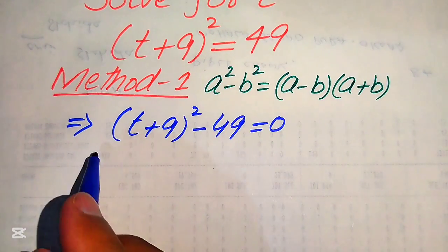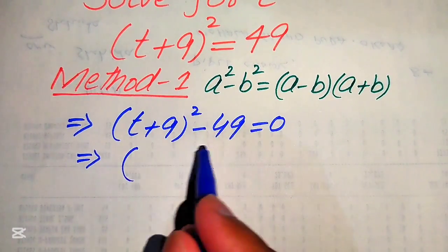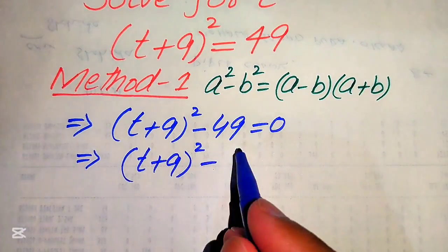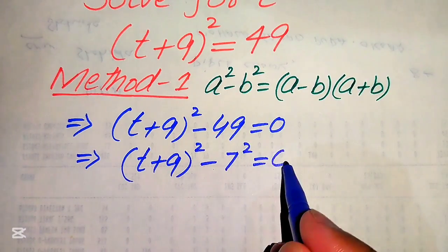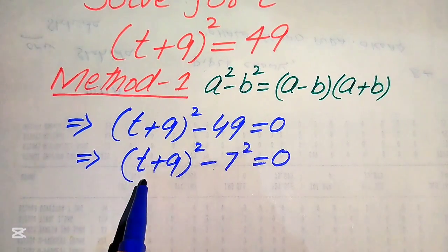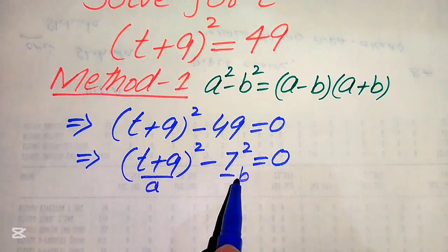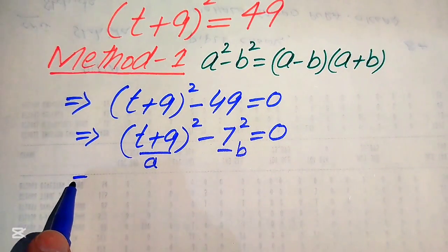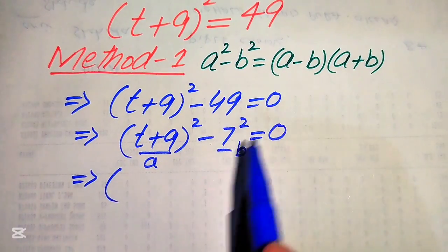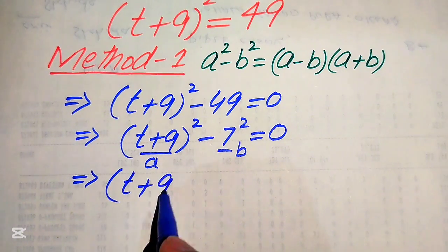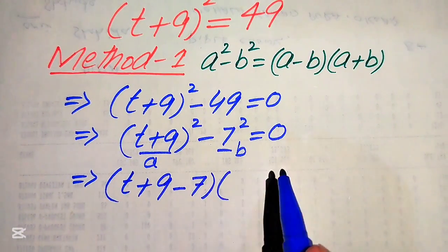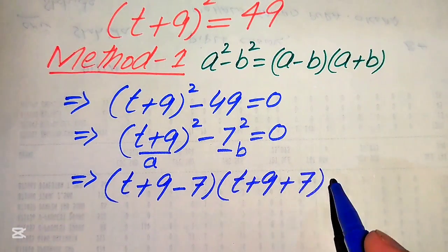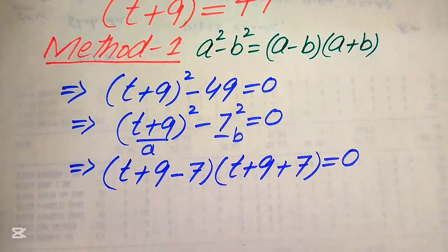Now we write 49 as 7², so the equation becomes (t + 9)² - 7² = 0. Here, (t + 9) is our 'a' and 7 is our 'b'. According to the difference of squares formula, we write this as [(t + 9) - 7] × [(t + 9) + 7] = 0.